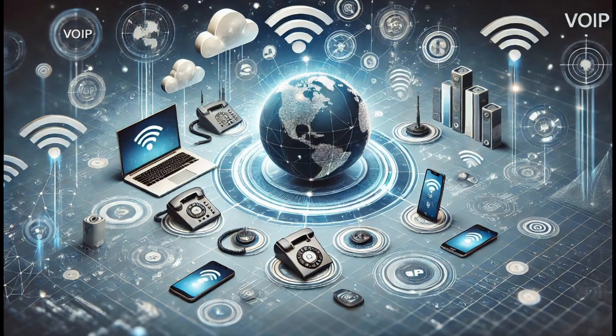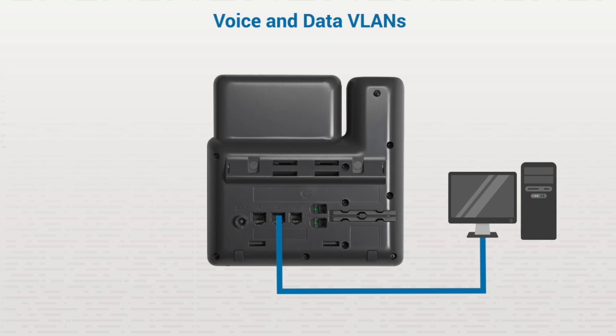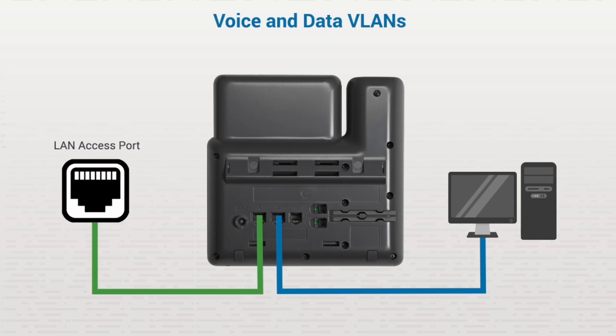As technology evolved to meet the demands of businesses, phones were developed to use internet technology — called Voice over Internet Protocol, or VoIP for short. Because many office workstations are only equipped with one port, VoIP phones were designed with two. One port is used to connect to a user's computer, while the other is used to connect to the LAN using an access port. You should prioritize VoIP traffic if you want to ensure sound quality, but there's a problem with setting up priorities like this.